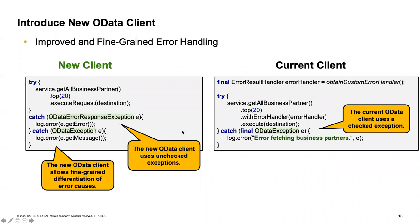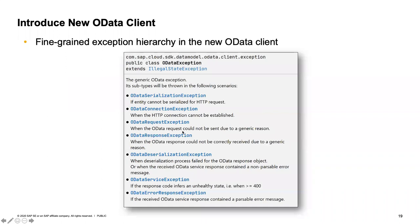In the next slide I'll show what different types of exceptions we provide in the new client. At the top level, ODataException is a generic exception which can be used in any scenario. Then we have ODataSerializationException for catching errors in case of serialization, ODataRequestException to catch generic errors on the OData request, ODataResponseException, and so on.